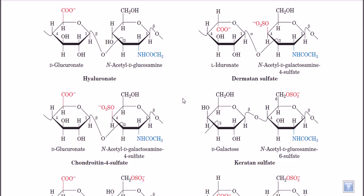We can find glycosaminoglycans in cell membranes and also in the extracellular matrix. A cell has a cell membrane; in plant cells there is a hard outer shell called a cell wall, but in animal cells we only have a cell membrane. This cell membrane alone is not enough for a cell to be properly placed in the cell lining, so other interactions are needed to properly position the cell, and this positioning is facilitated by glycosaminoglycans.